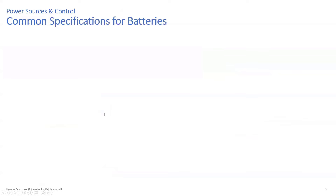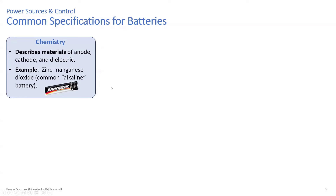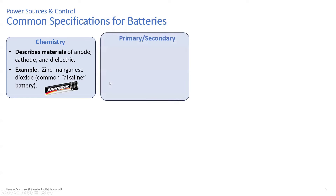Let's talk about common specifications for batteries. First is chemistry, which describes the materials of the anode, cathode, and electrolyte. An example is the AA alkaline battery — zinc manganese dioxide. You've heard of lithium polymer batteries and different types; that's describing the chemistry, and different chemistries have different capabilities, different voltages, and different capacities.